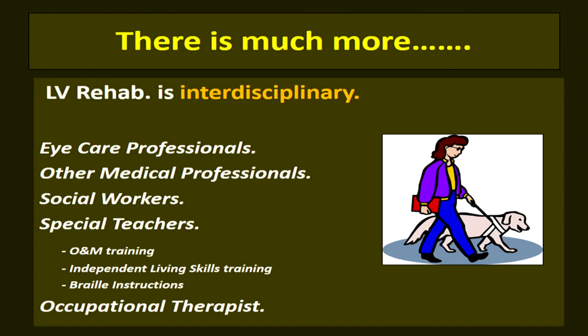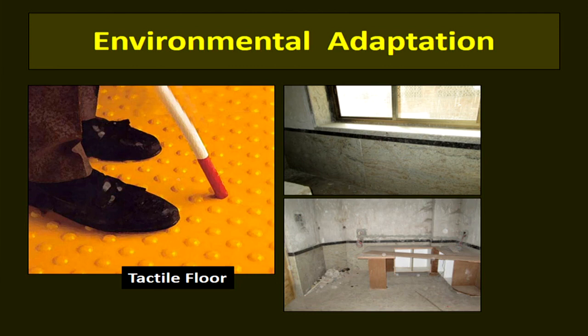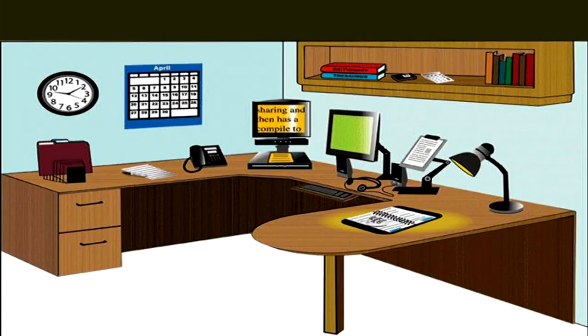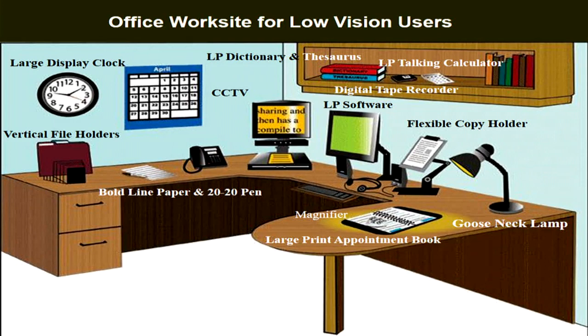Environmental adaptation is very important for low vision patients. Tactile flooring, as seen in countries like China, Japan, and America, guides low vision patients on where to walk. When building a new wing in our hospital, we put up a contrast line on all the walls so that a low vision patient walking in has a guide to follow. A low-vision-adapted office can include a large display clock, large print dictionary and thesaurus, large print software, and magnifiers — all adapted for a low vision workplace.